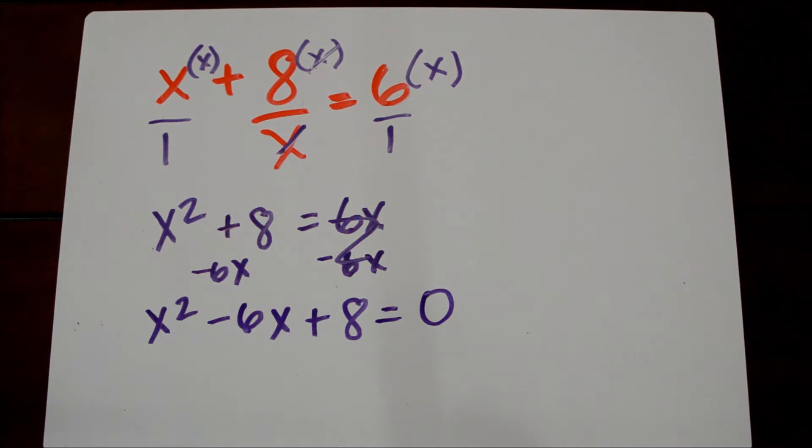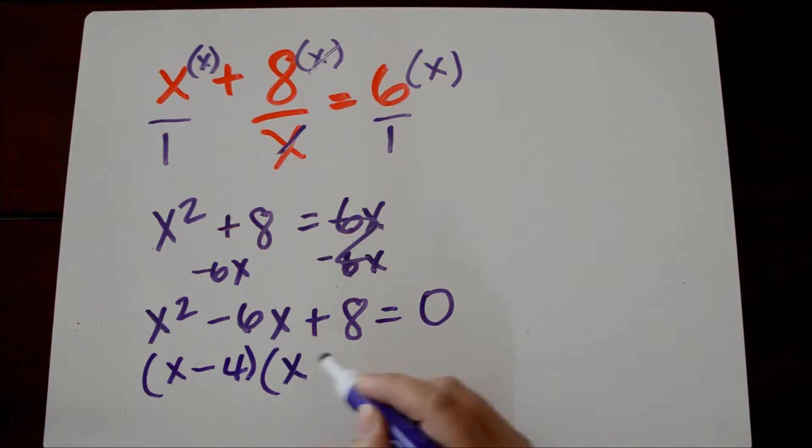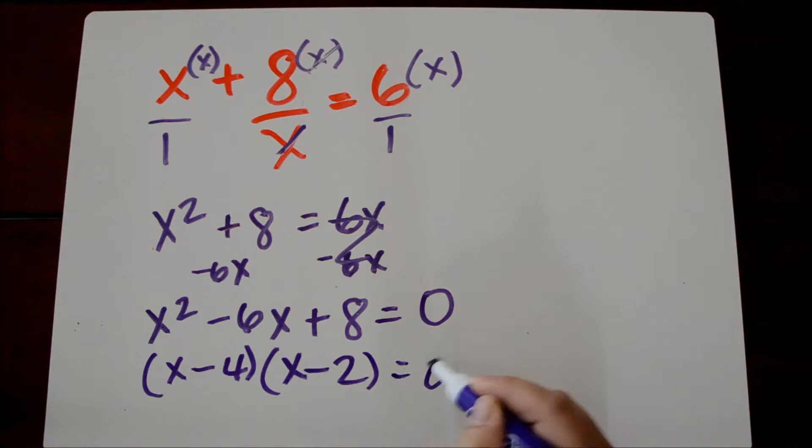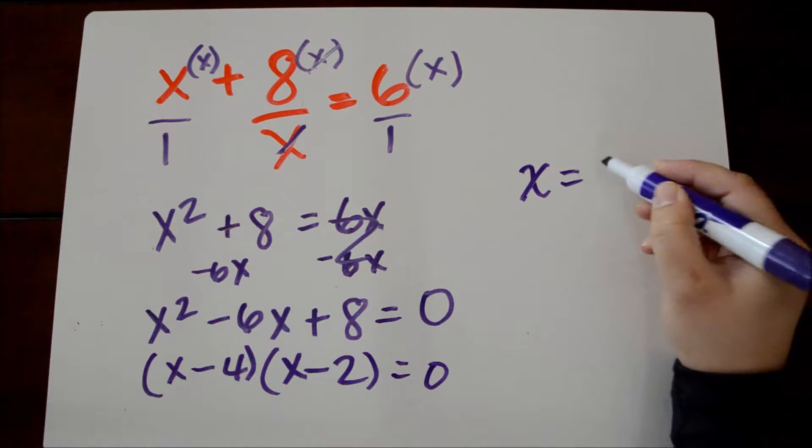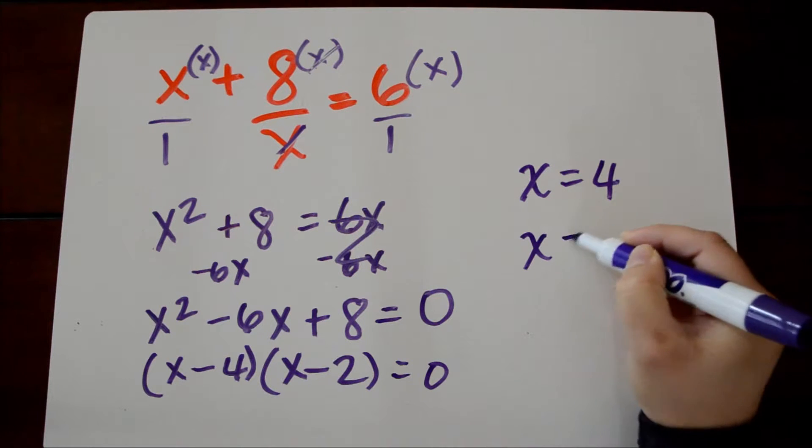And I could factor this quadratic equation. So when I factor, it's going to be x minus 4 times x minus 2 equals 0. And when I set each of those factors equal to 0, I get x is equal to 4 and x is equal to 2.